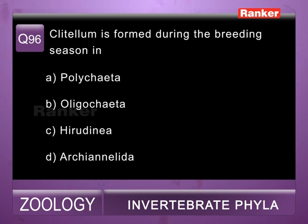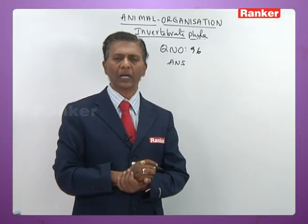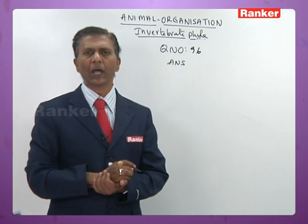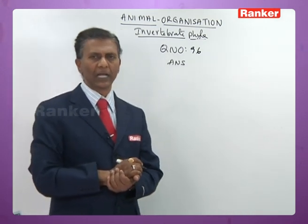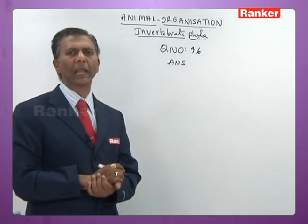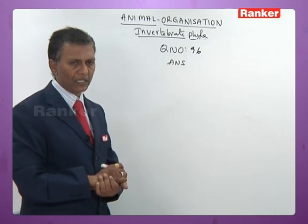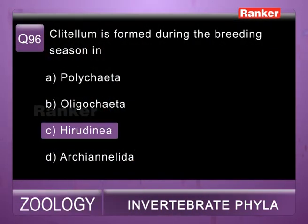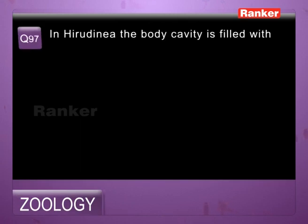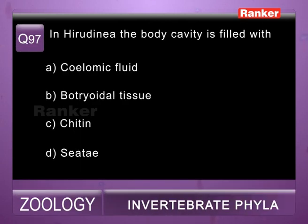Question ninety-six: clitellum is formed during breeding season in — a) Polychaeta, b) Oligochaeta, c) Hirudinea, d) Archiannelida. In Hirudinarians, clitellum appears only during breeding season in the 9th, 10th, and 11th segments. So ninety-sixth question correct answer is c) Hirudinea.